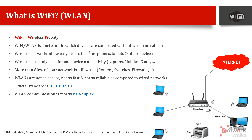Wi-Fi or WLAN is a network in which devices are connected without wires or cables, directly through the air interface — through radio signals. Just like our mobile phone connects to the mobile network towers without any cable, Wi-Fi transfers data wirelessly. This is called Wi-Fi, WLAN, or Wireless Local Area Network.